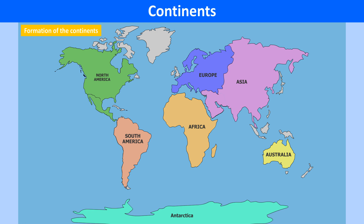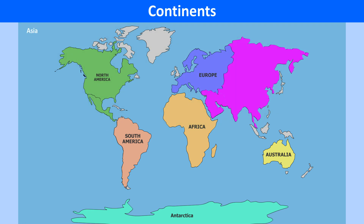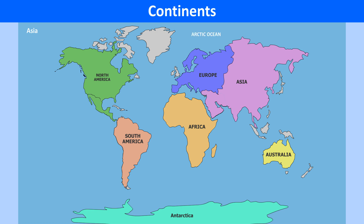There are seven continents in all. Most of these lie in the northern hemisphere. Asia, the world's largest continent, covers one third of the Earth's total land surface and is surrounded by the Arctic Ocean in the north, the Indian Ocean in the south and the Pacific Ocean in the east. It has the highest mountains and the lowest points in the world.